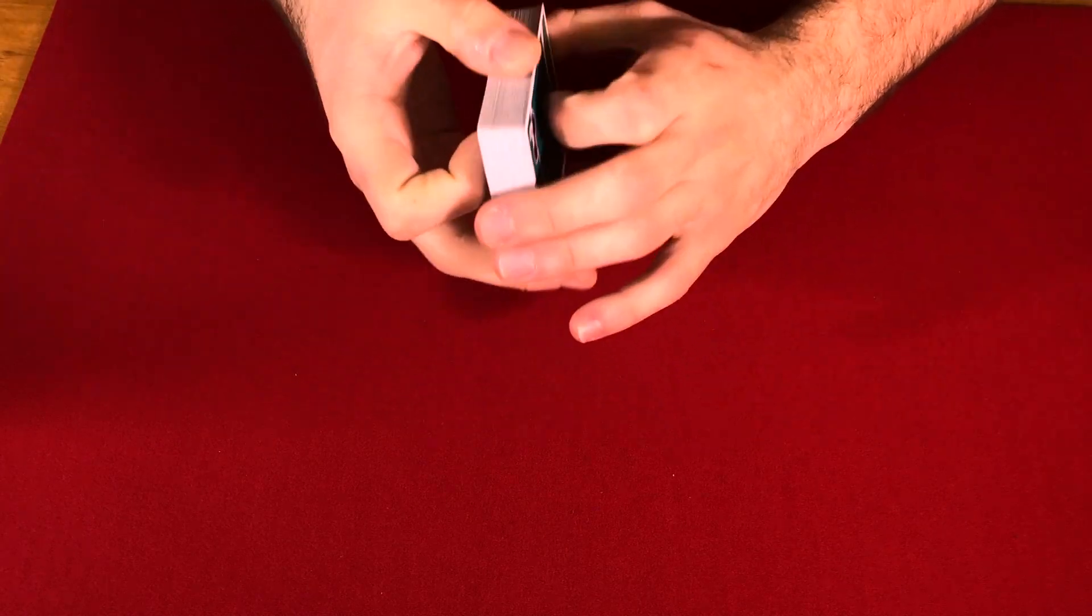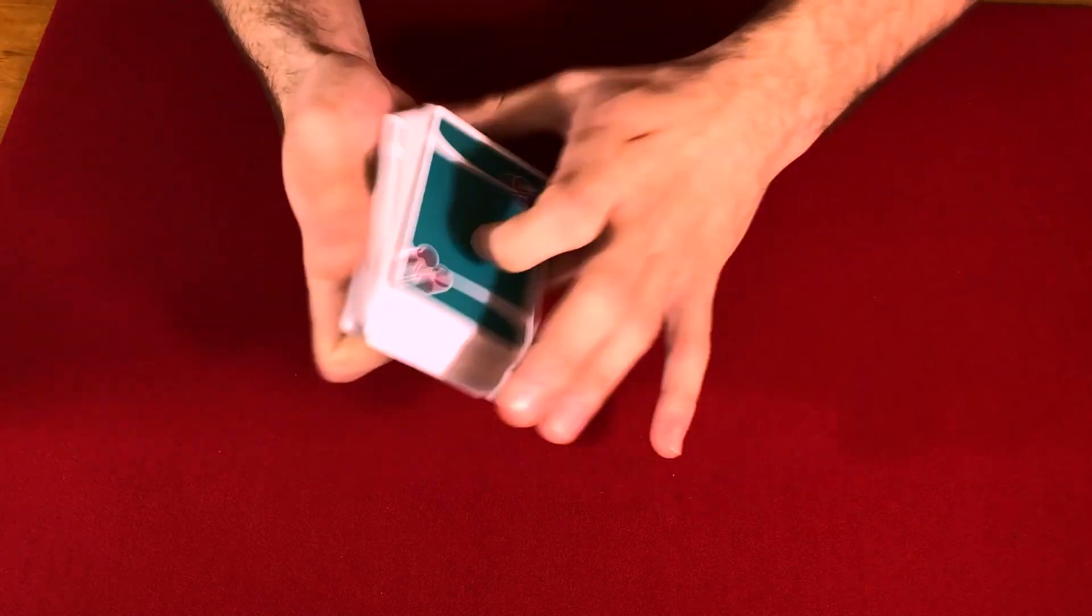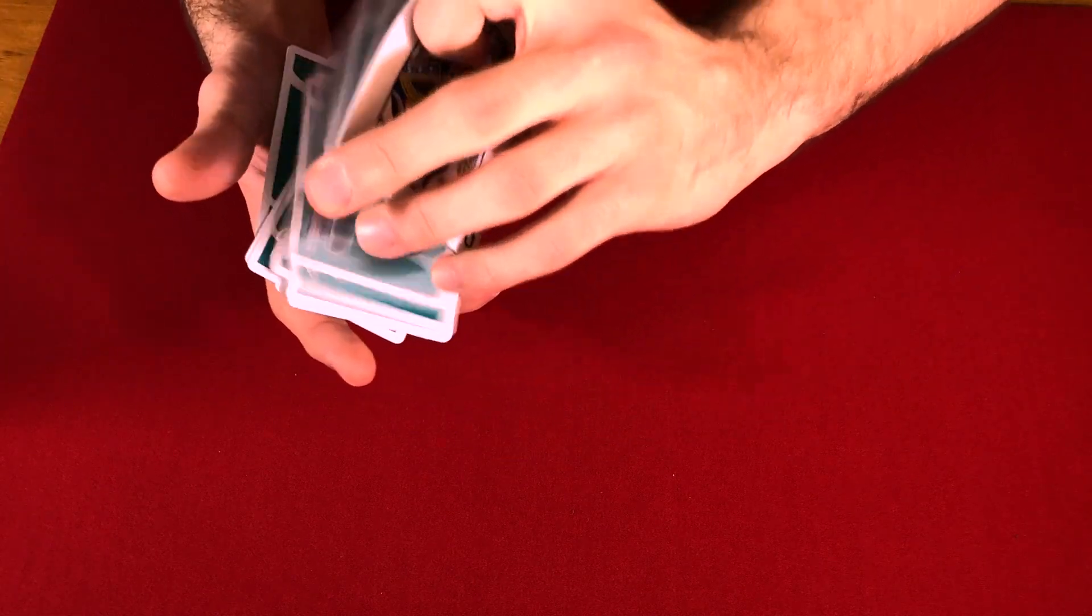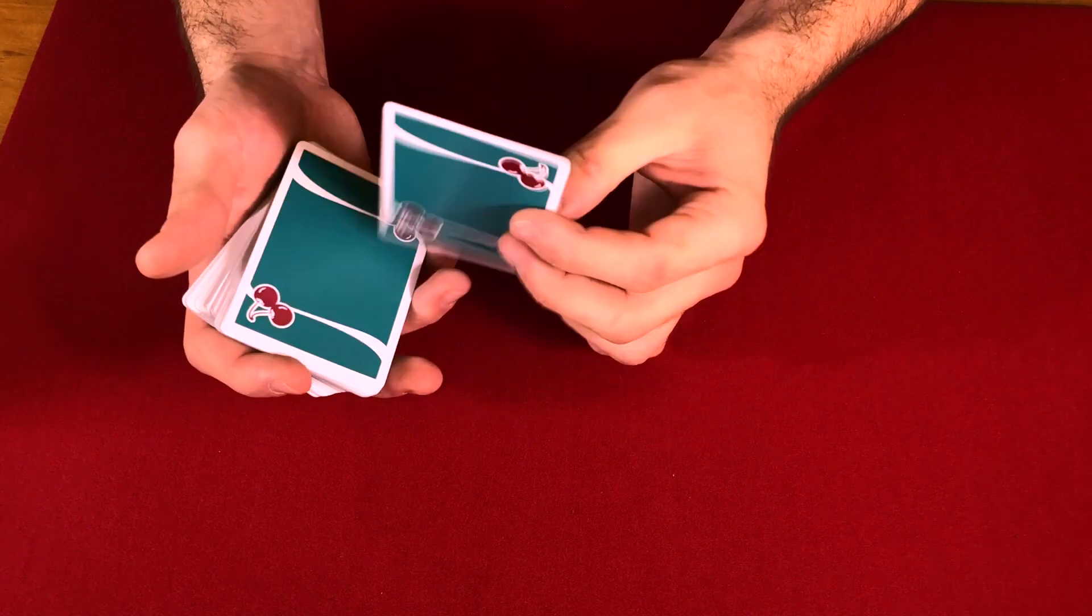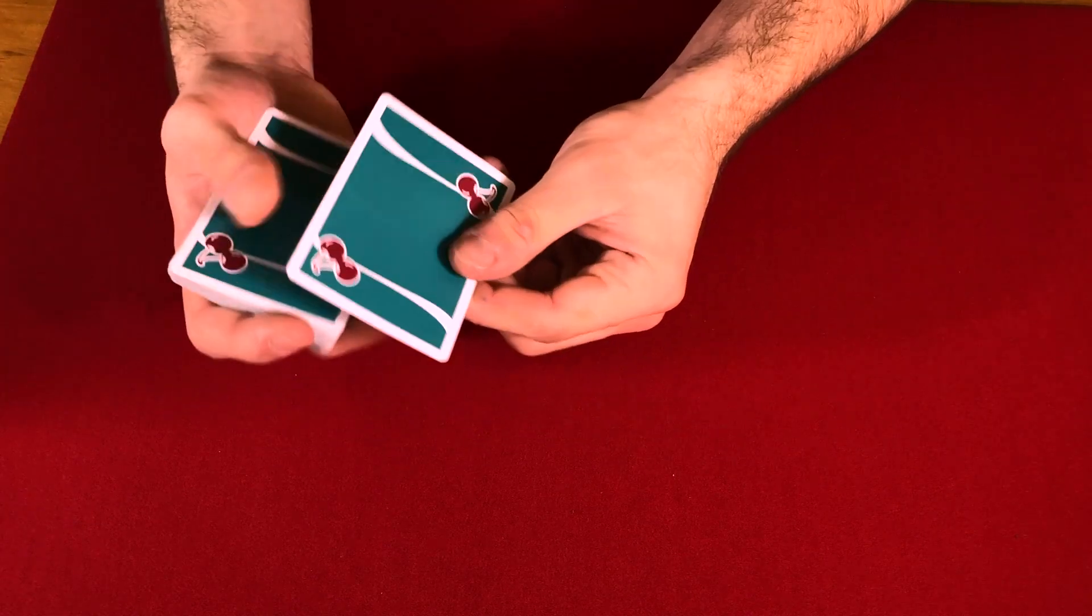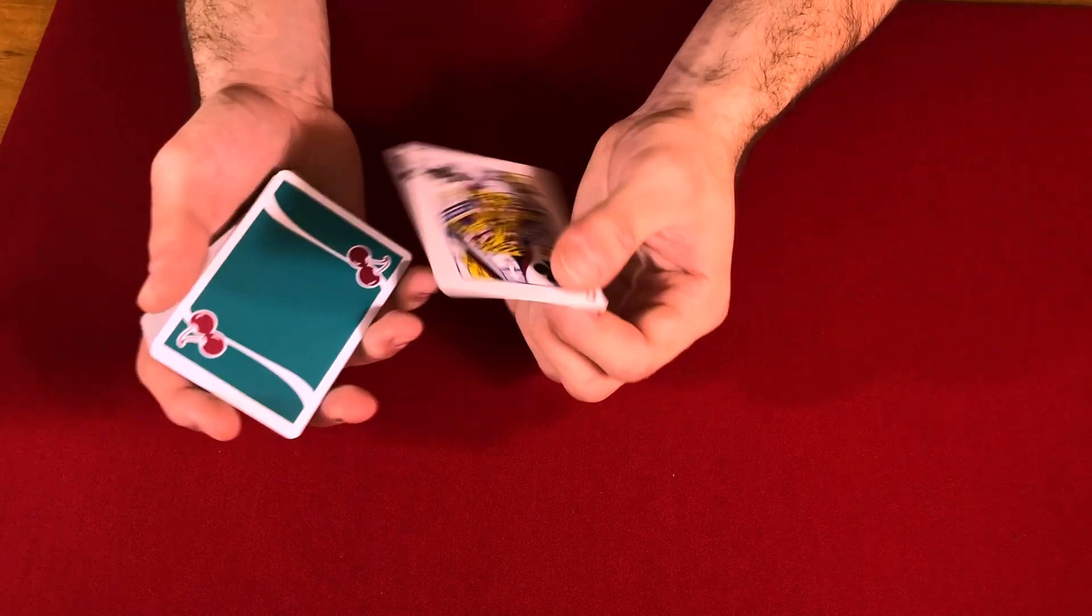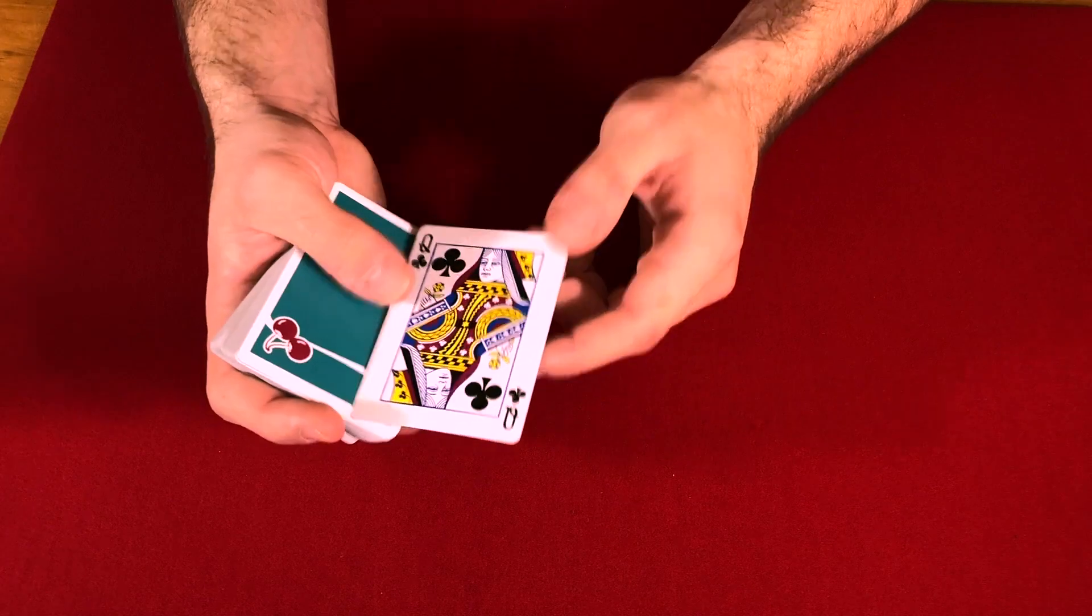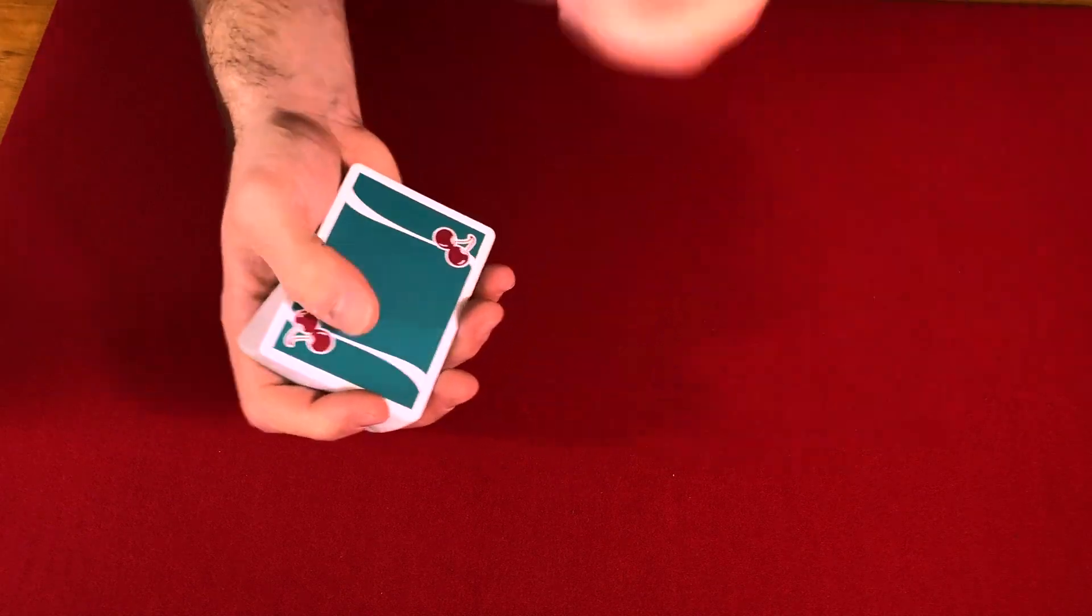Alright guys, so let's learn how this one works. It's really easy and the explanation shouldn't take us that long to go over. So basically what we're going to have is someone select the card and look at the card and the card is then going to be lost into the middle of the pack convincingly and then it really is just going to be controlled to the top of the pack here. So you can control the card to the deck in your favorite manner. Once the card is controlled to the top of the deck, here is where the magic kicks in.